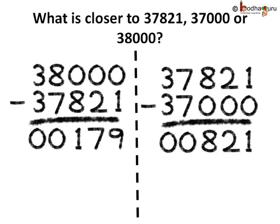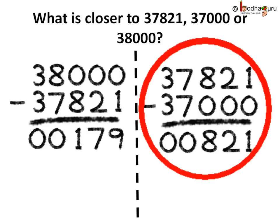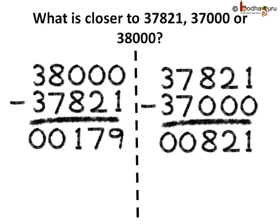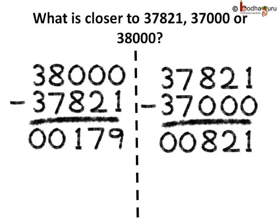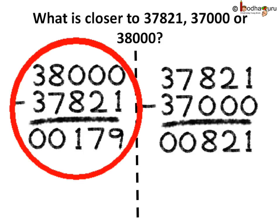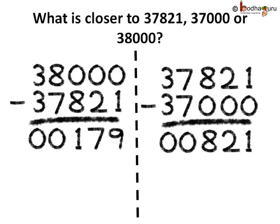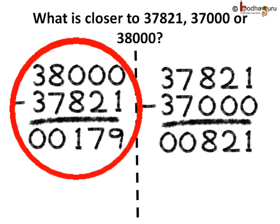And what is the difference between 37,000 and 37,821? 37,821 minus 37,000 is equal to 821.